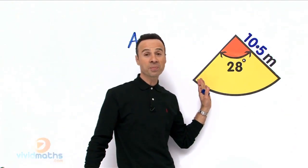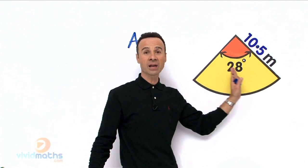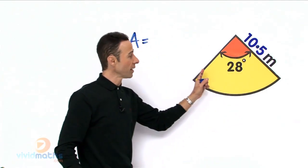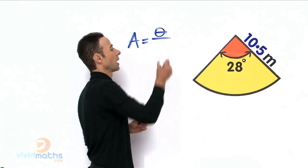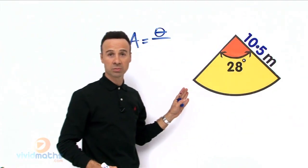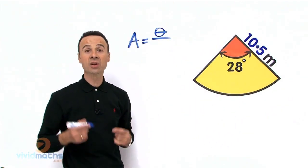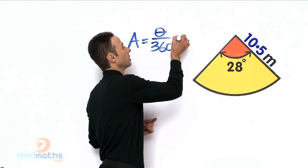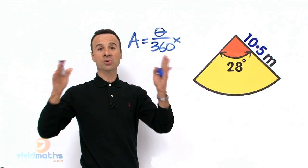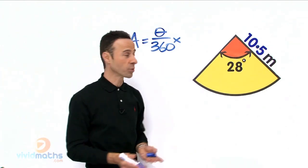Now first of all, the first part of the formula is the fraction part of it, and that angle there we will call it theta. And the total of the whole circle, the whole disk, the whole birthday cake, is 360 degrees, of course, times the area of a conventional full circle, which is pi r squared.